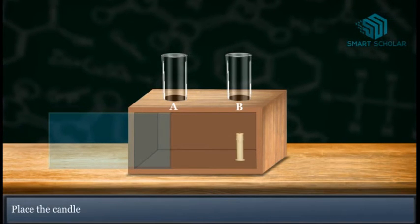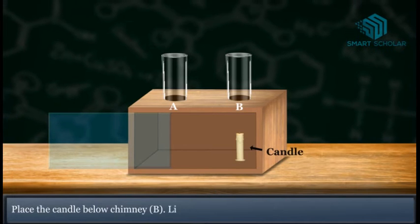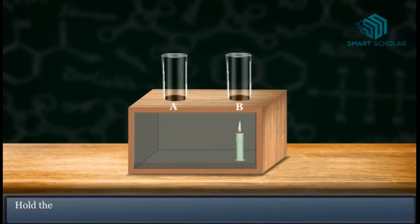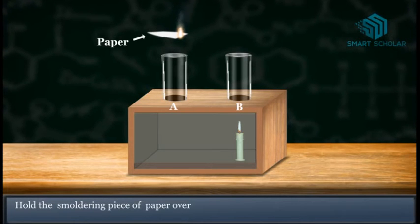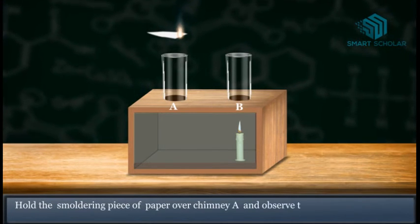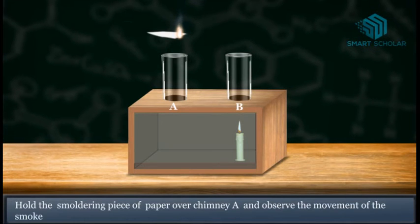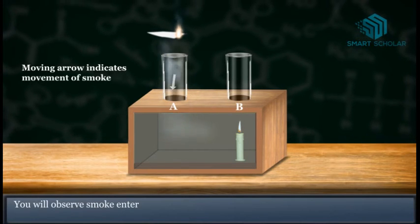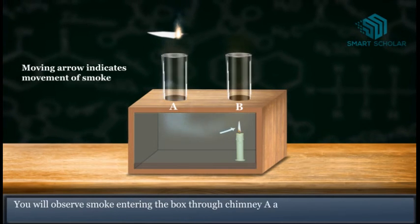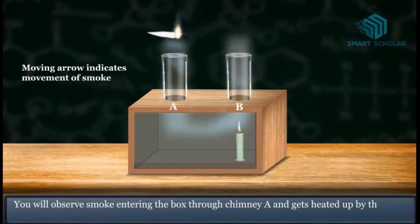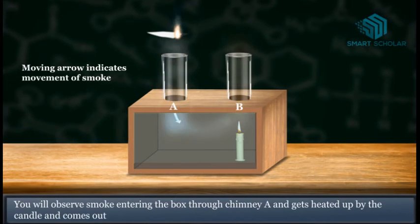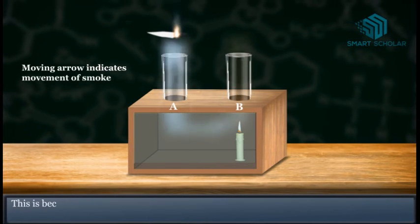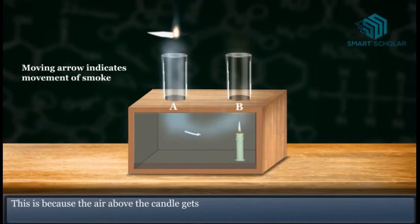Place a candle below chimney B and light it. Hold a smoldering piece of paper over chimney A and observe the movement of smoke. You will observe smoke entering the box through chimney A, getting heated by the candle, and coming out of chimney B. This is because the air above the candle gets heated and expands.